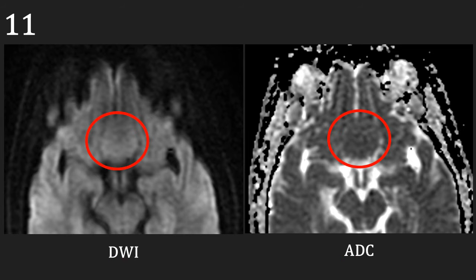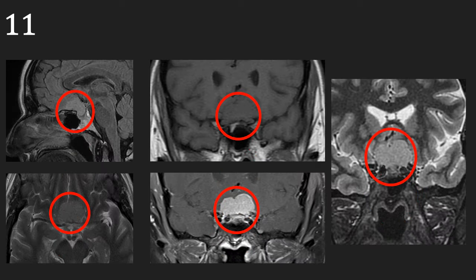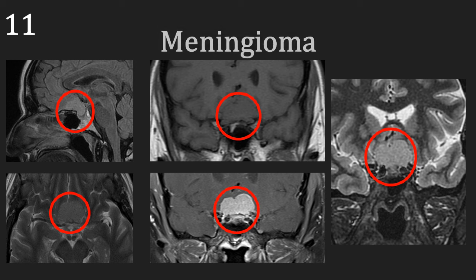There is relatively little signal abnormality on the DWI and ADC. The final two sequences are the pre- and post-contrast, where the mass lesion shows intense contrast enhancement. Bringing this all together, we have a mass lesion around the area of where the optic nerves lie, which is outside of the brain tissue and enhances with contrast. This is a meningioma that is compressing the left optic nerve, causing the patient's visual symptoms.